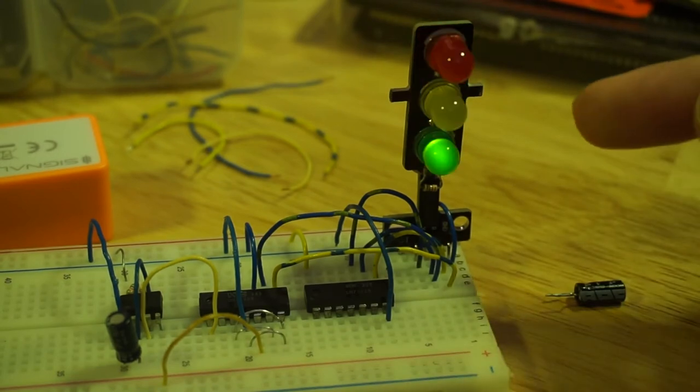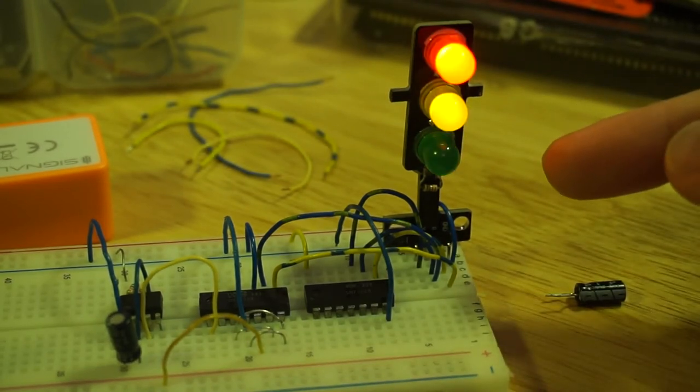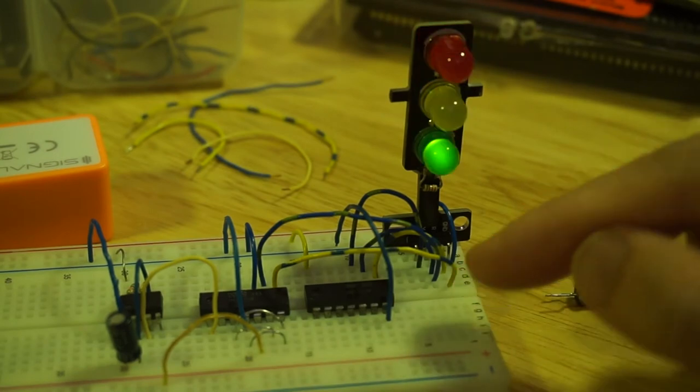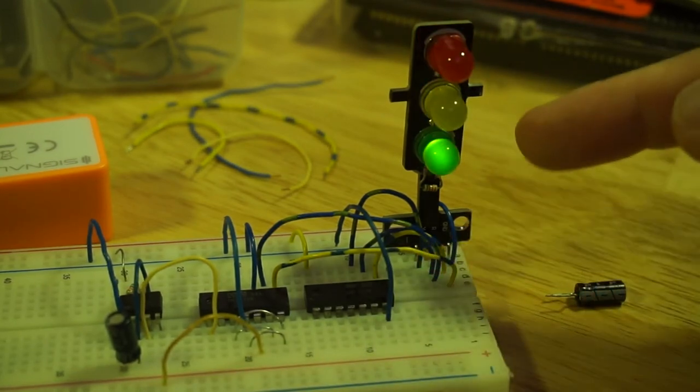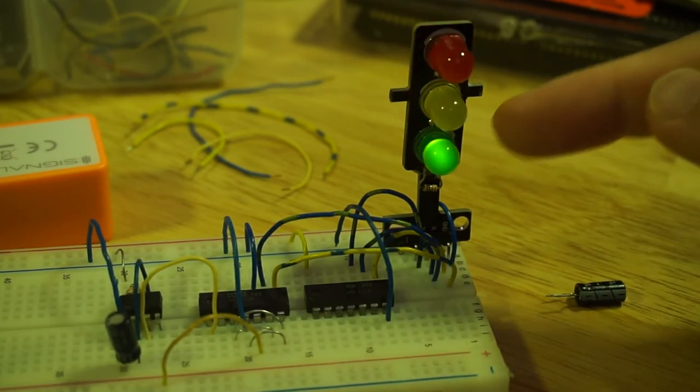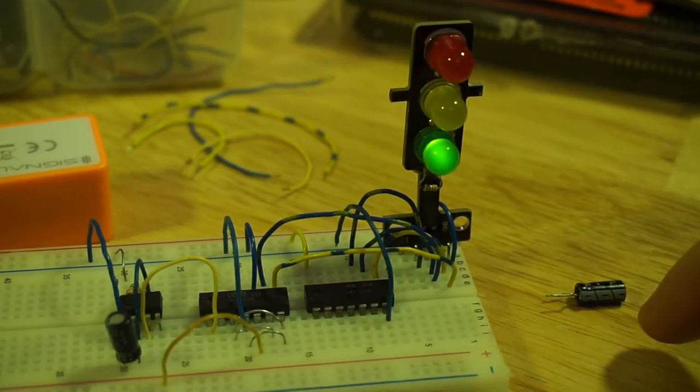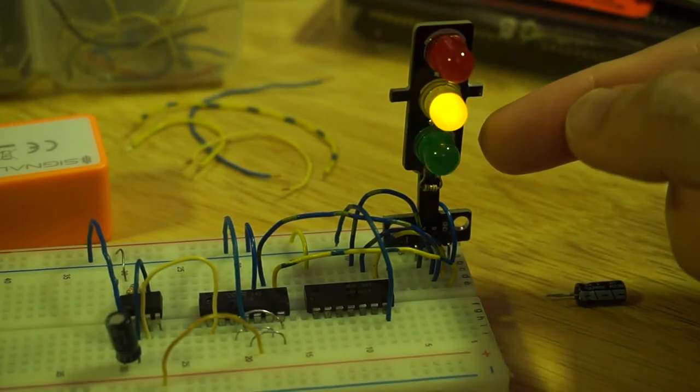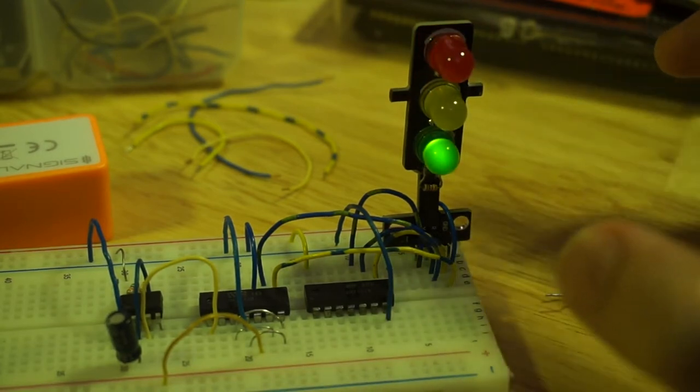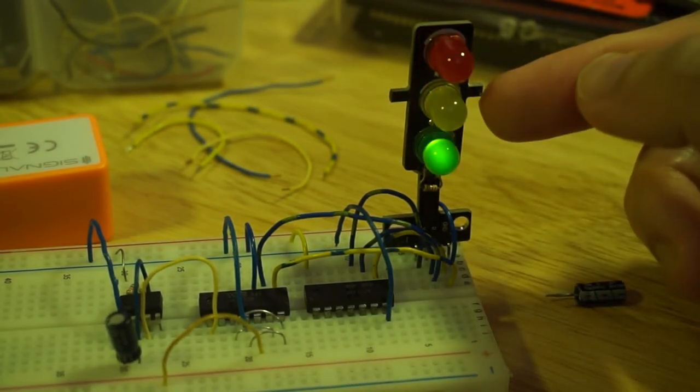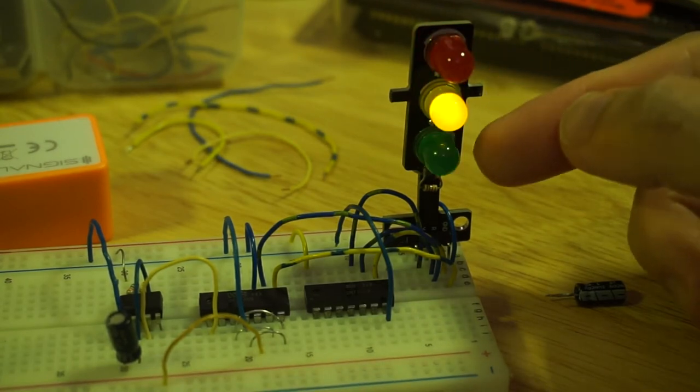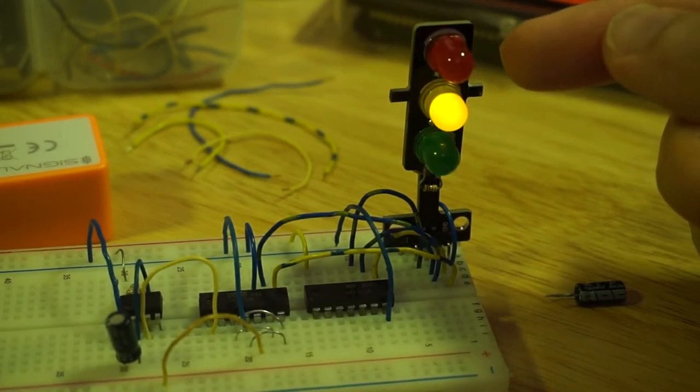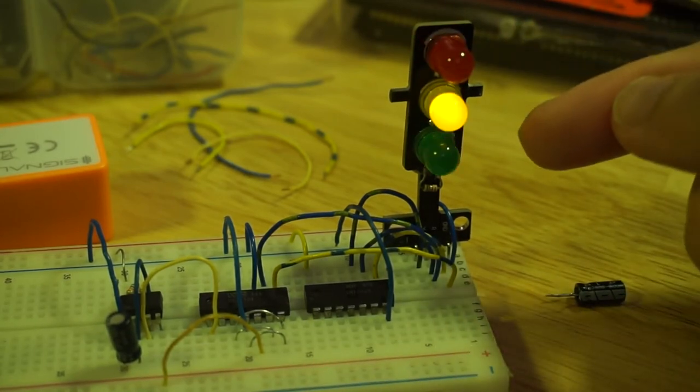Now, there's one problem with the sequencing. In some of the implementations I've seen using the 555 timer and 4017, they use the entire state space and map the same pattern of having just the green on or having just the red on to multiple states of the decade counter. So that way, they've got the green pattern to linger longer than when the yellow is showing. You don't want the yellow to just show the same amount of duration as the green or only having the red on, because that's not the way real traffic lights work.